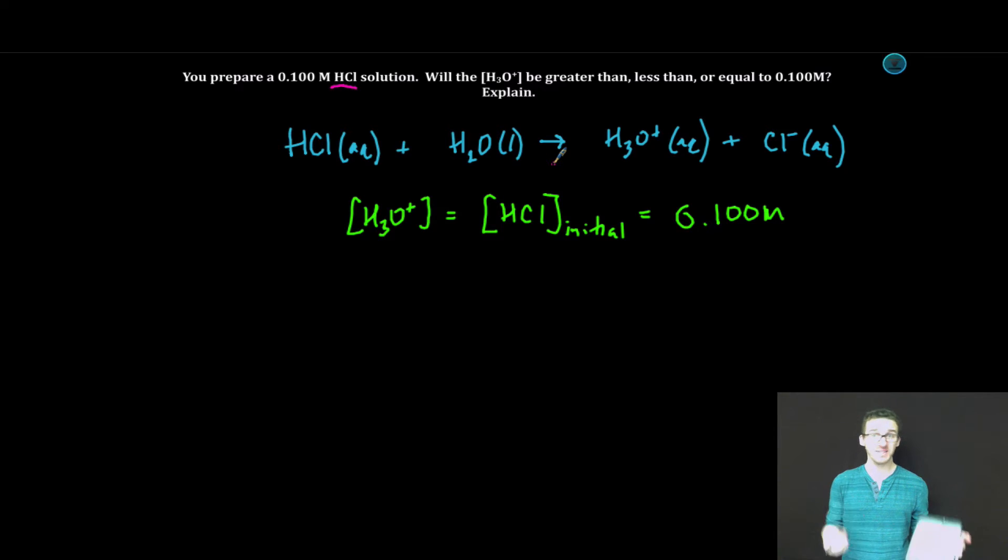You have to recognize that it completely ionizes 100%. In other words, all of this HCl completely ionizes to form hydronium and chloride ion. There's no original HCl molecules left.